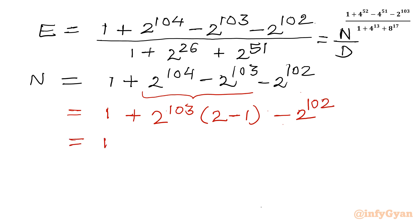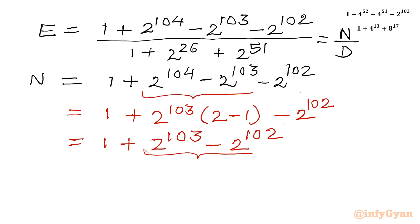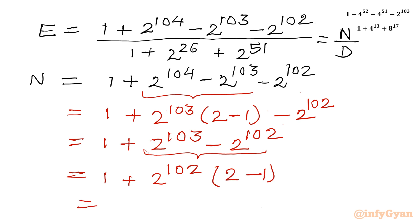Now 2 minus 1 is 1, so we have 1 plus 2 power 103 minus 2 power 102. Again from these two terms I will take 2 raised to the power 102 common, and in the bracket I can write 2 minus 1, which is 1. So our numerator overall value is 1 plus 2 raised to the power 102. This is our simplified numerator.